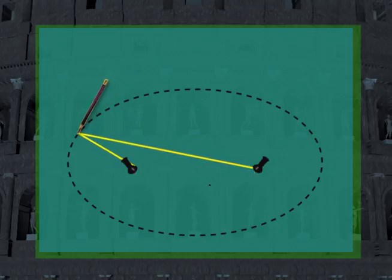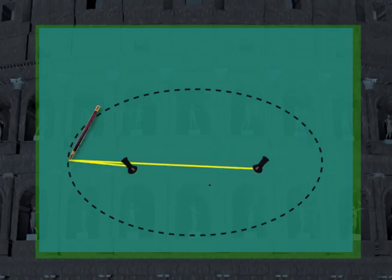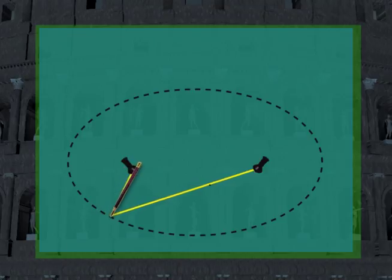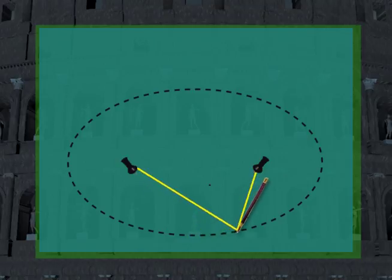As you move the pencil around, the side lengths of the triangle change, but the total amount of string that represents both sides is constant. In other words, the sum of the lengths of the two sides of the triangle is constant, fulfilling the requirement of an ellipse.